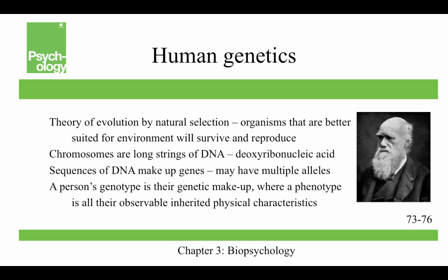Let's start by talking about human genetics. The chapter begins by discussing the sickle cell and how it is believed to provide some protection from malaria. It moves on to the theory of evolution by natural selection — that picture is of Charles Darwin. This theory holds that organisms better suited for their environment will survive and reproduce. This is related to chromosomes, which are long strings of DNA. Sequences of DNA make up genes, which may have multiple alleles.